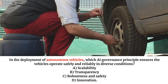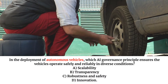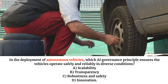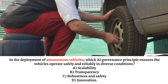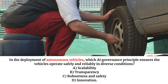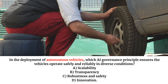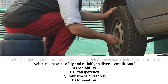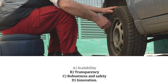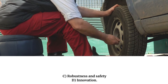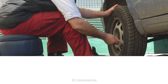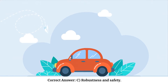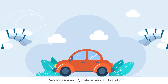In the deployment of autonomous vehicles, which AI governance principle ensures the vehicles operate safely and reliably in diverse conditions? A. Scalability. B. Transparency. C. Robustness and safety. D. Innovation. Correct answer: C. Robustness and safety.